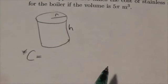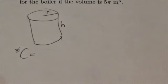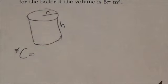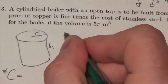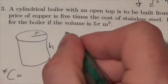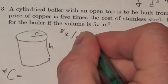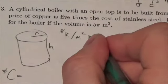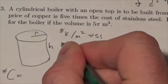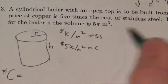So we're going to make this out of stainless steel and copper, and we know that the price of copper is five times the price of the stainless steel. So let's say that the price of the stainless steel is k dollars per meter squared. This is going to be for the stainless steel, so that means the copper will be 5k per meter squared, and this will be the copper.